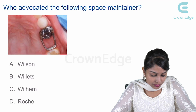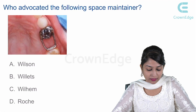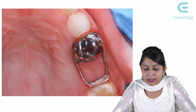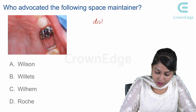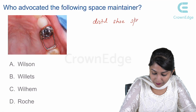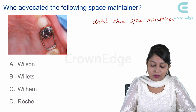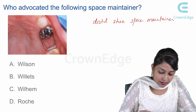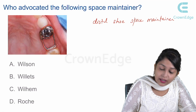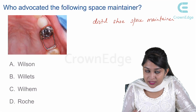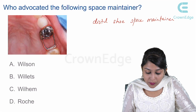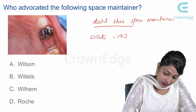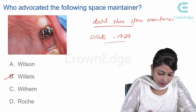Let's look at this question: who advocated the following space maintainer? Looking at the picture, it's a distal shoe space maintainer. A distal shoe space maintainer is given when there is a premature loss of a primary second molar before the eruption of the permanent first molar, to guide that eruption. This was advocated by Willets in the year 1929, so the right answer is option B, Willets.